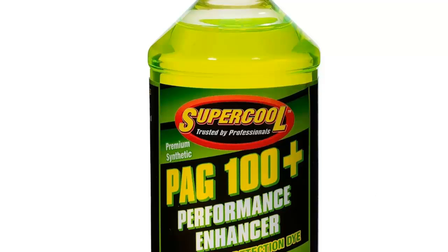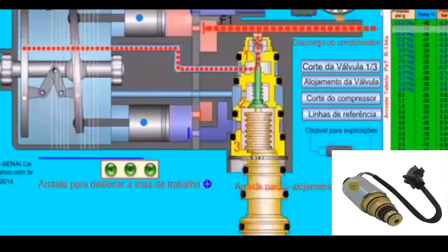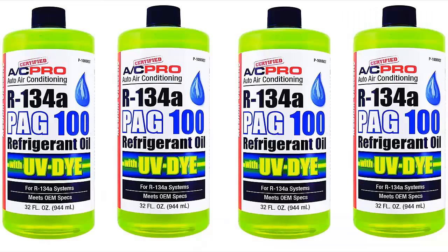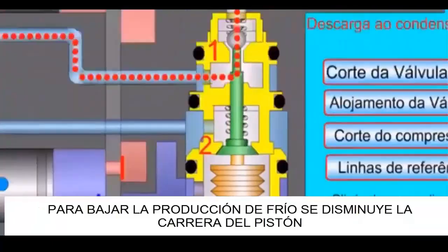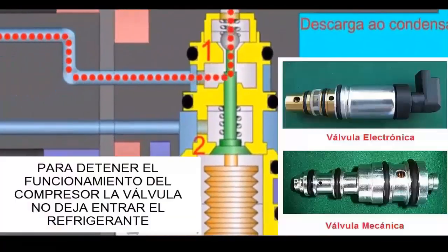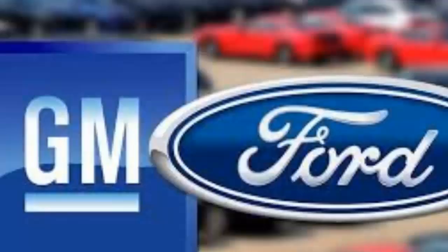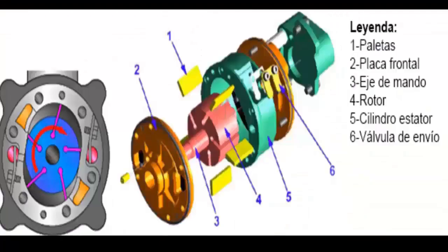Regarding PAG-100 oil, it is considered medium viscosity. It is commonly used in older vehicle air conditioning systems and some modern systems. It provides better wear protection and is suitable for systems that require medium viscosity. It is used in some Ford and General Motors models that require a balance between fluidity and wear protection.